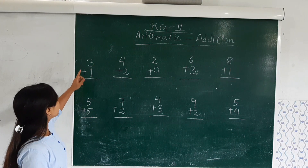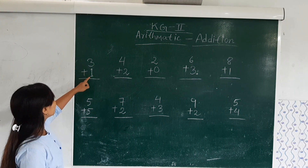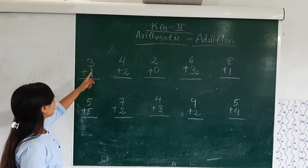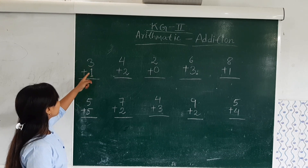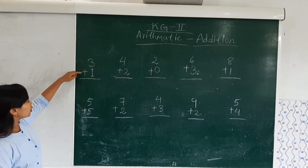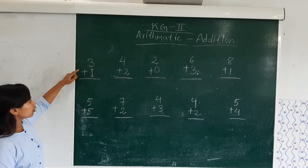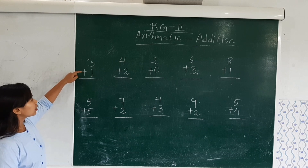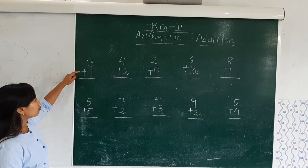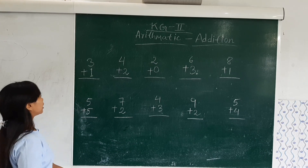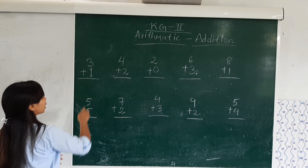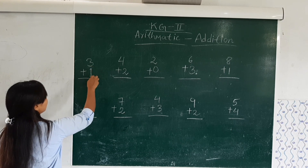Here we have 3 plus 1. We don't know the result, so we have to find out the result. Here I want to remind you the sign — whenever you see this sign, you have to know that this is the addition or plus sign. So in this method, what we have to do is add these two numbers.